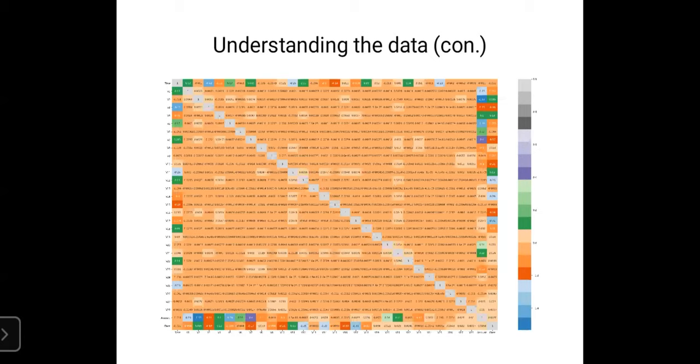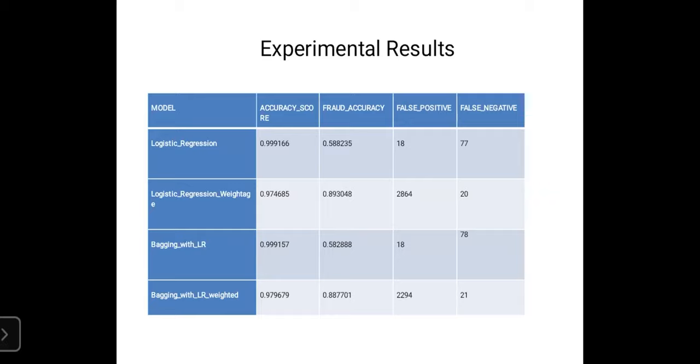This graph shows the correlation between the variables. So this is a heat map. So these are the experimental results that we have found after doing the logistic regression, then using class weight parameter with logistic regression, and then after that using bagging with logistic regression and logistic regression with weightage. In the first one, logistic regression, we have got the accuracy score as 99%, and the fraud accuracy 58.